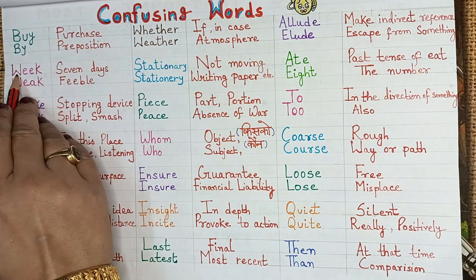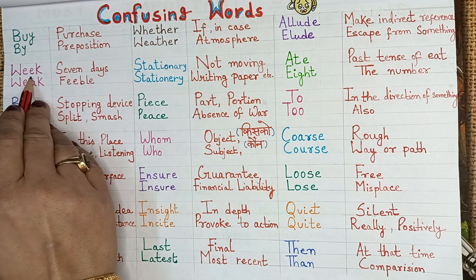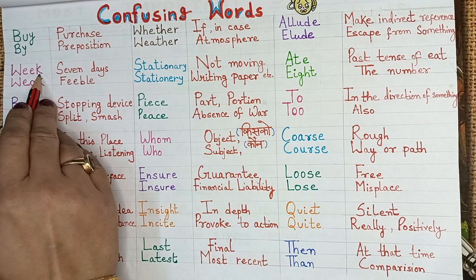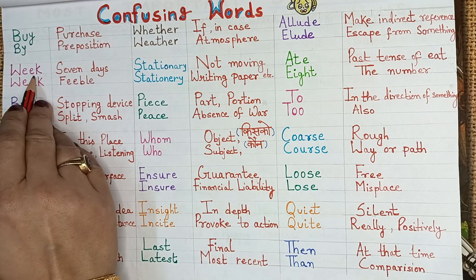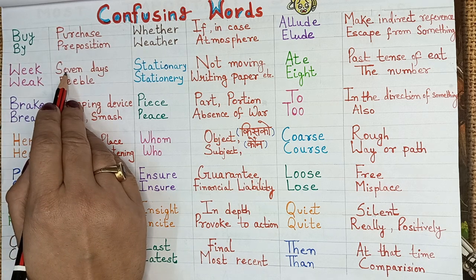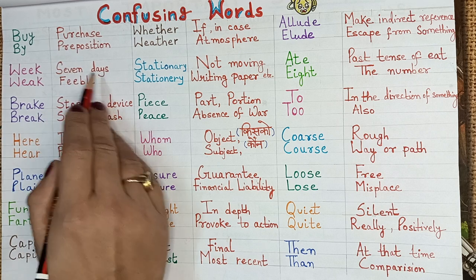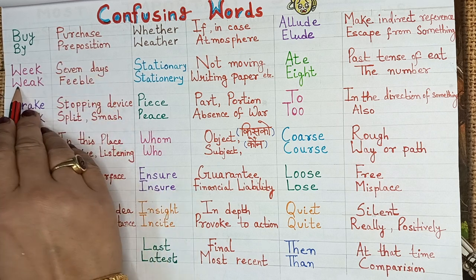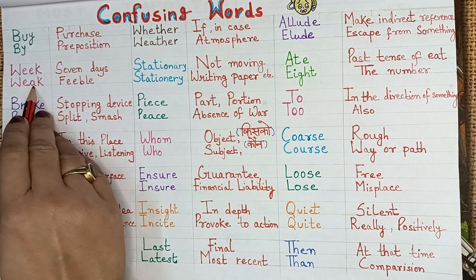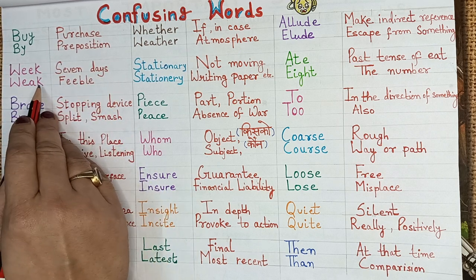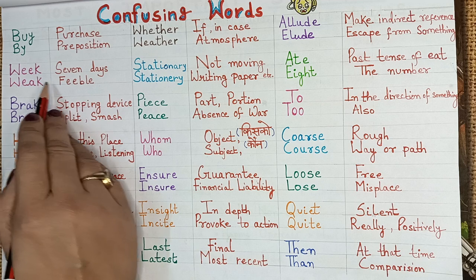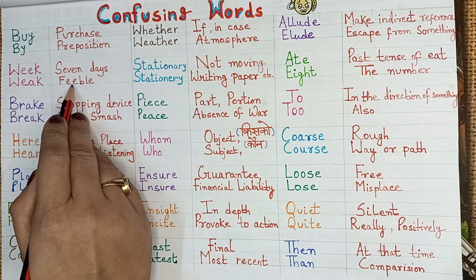W-E-E-K — week means seven days. W-E-A-K — weak means feeble.